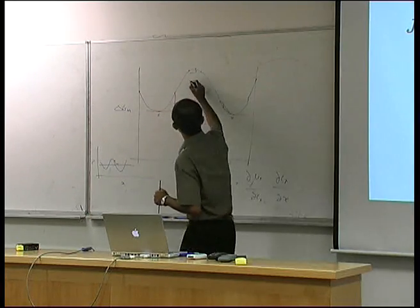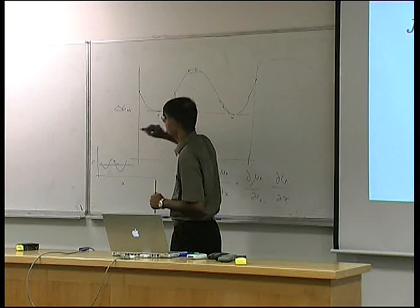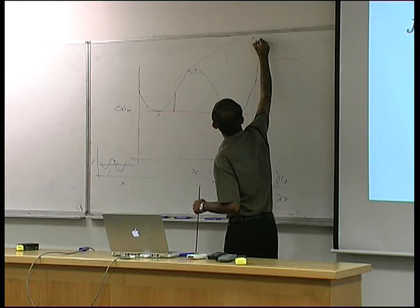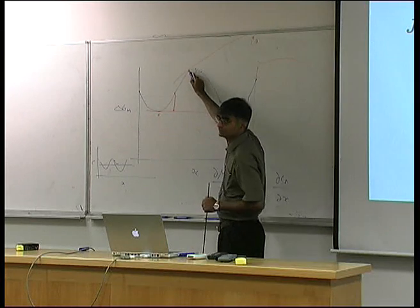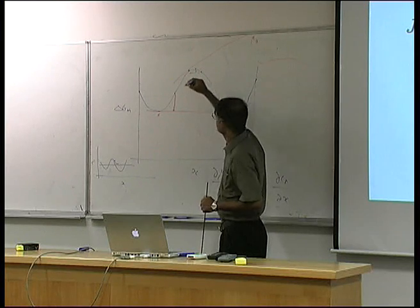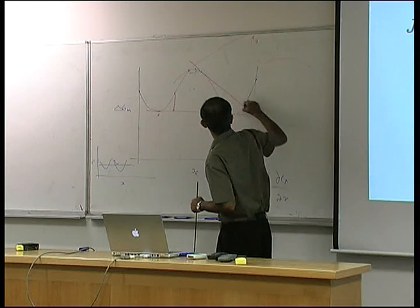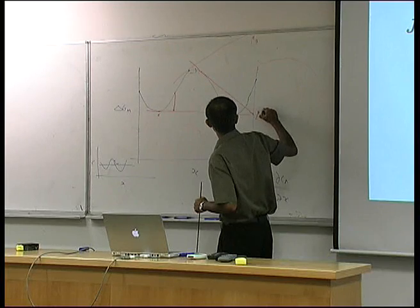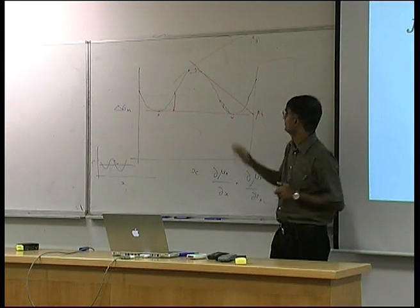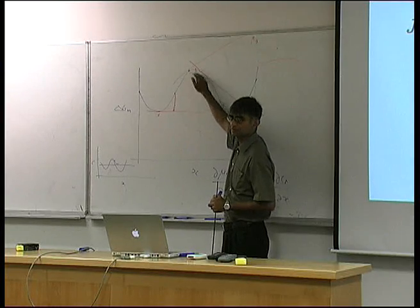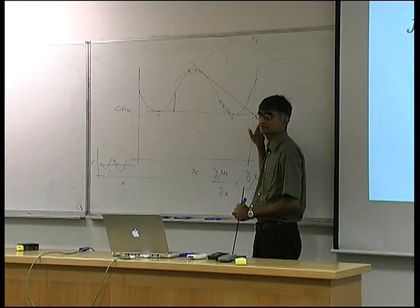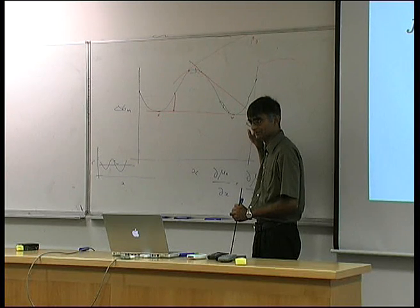In this region, the chemical potential actually decreases as the concentration increases. Looking at a particular composition and drawing a tangent, mu_B for that composition is at a certain value. As I increase the concentration of B, mu_B has decreased. So when you have a curvature of this sign, the chemical potential actually decreases when the concentration increases.